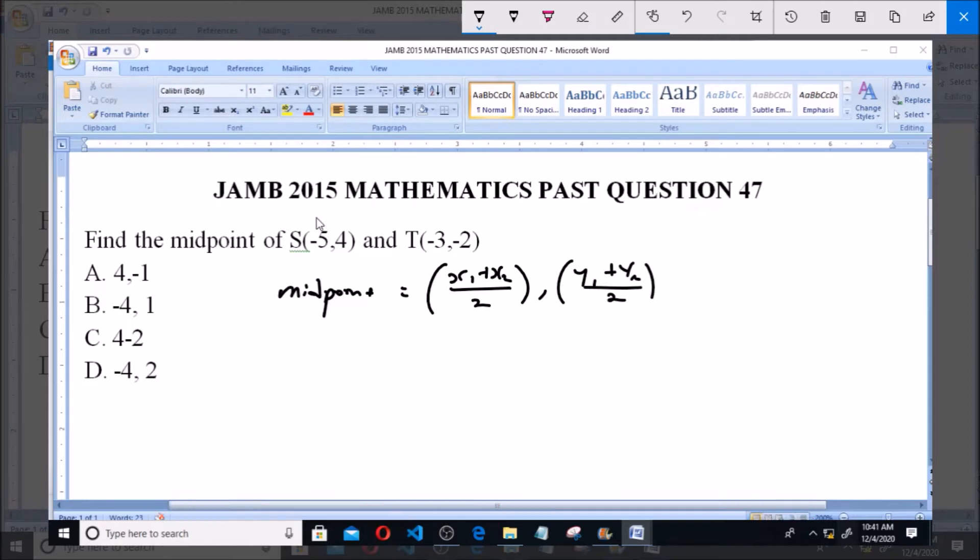Now looking at this, this is x1 and this is x2, this is y1 and this is y2. So therefore the midpoint now will be equal to x1 which is -5 plus -3 all over 2, comma, then y1 is 4 plus -2 all over 2.